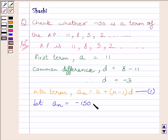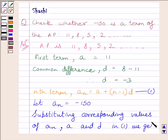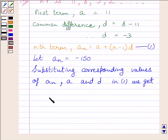Now substituting corresponding values of a_n, a and d in this expression we get minus 150 is equal to 11 plus (n minus 1) multiplied by minus 3.